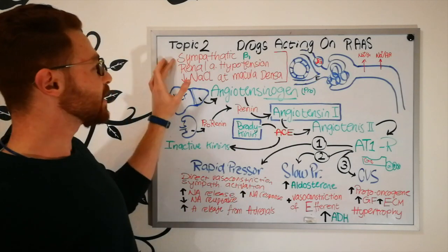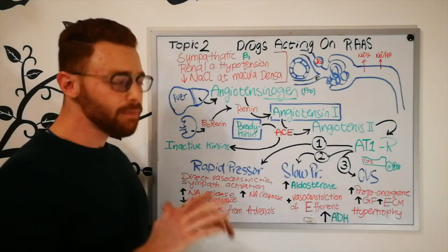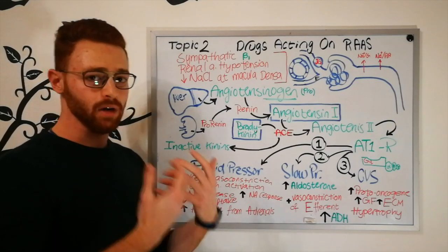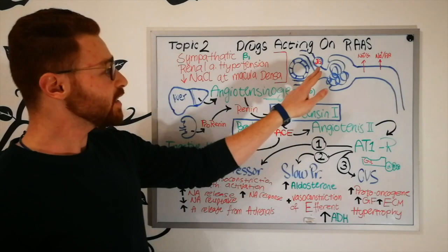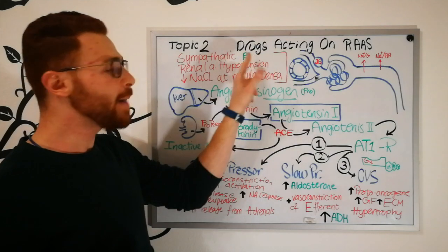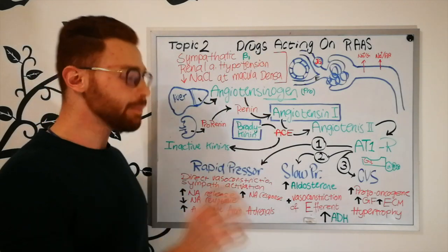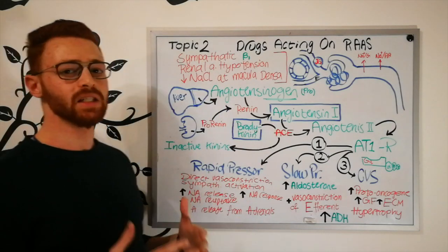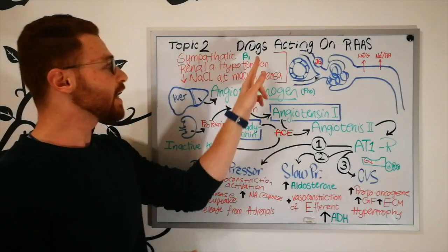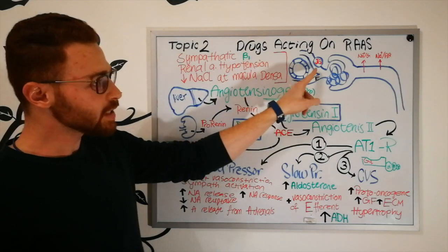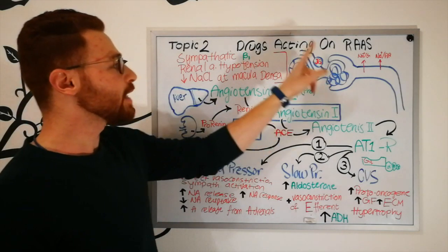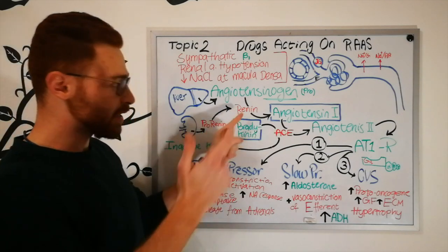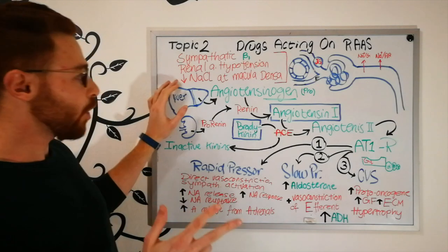The second cause is activation of the sympathetic nervous system, which leads to release of noradrenaline. The JG cells have beta-1 adrenergic receptors, so the released noradrenaline acts on these beta-1 receptors and leads to release of pro-renin, which is later converted to active renin.